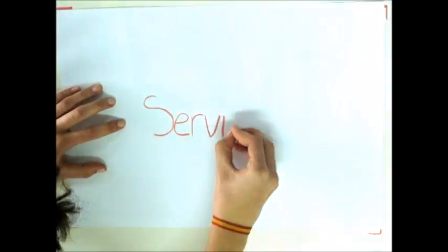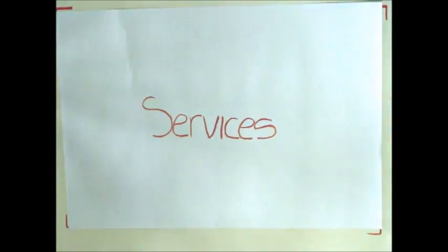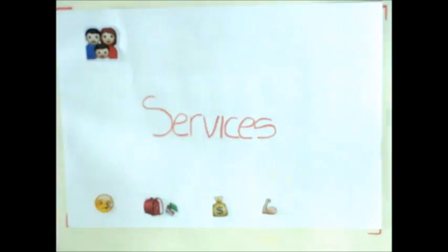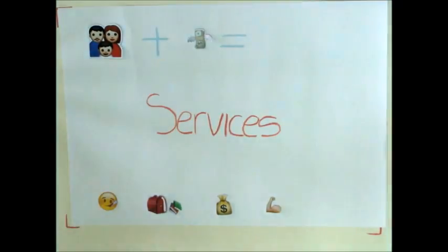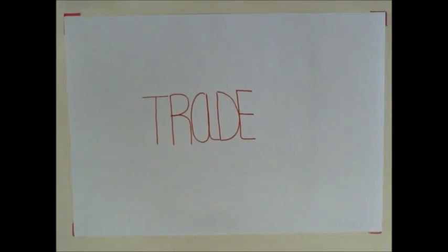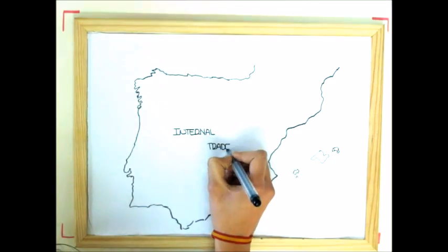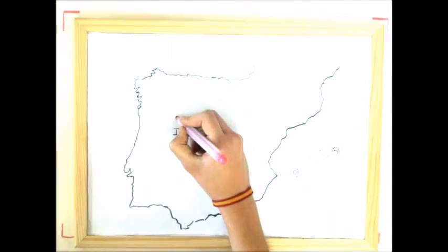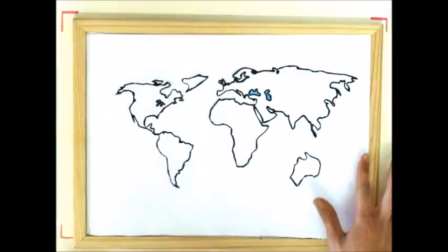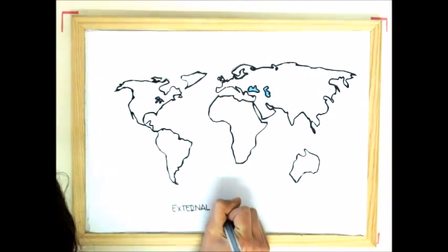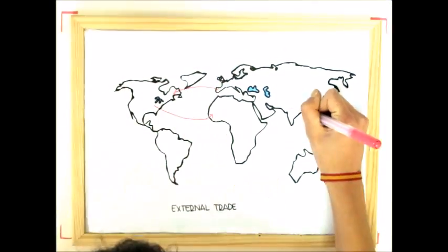And finally, we are going to talk about services. There are other types of activities in the tertiary sector such as healthcare system, education system, communications and trade, in which we are going to put more attention. Trade is the selling of products in return of goods, money or other products. There are two types of trade: internal trade within a country and external trade among countries.